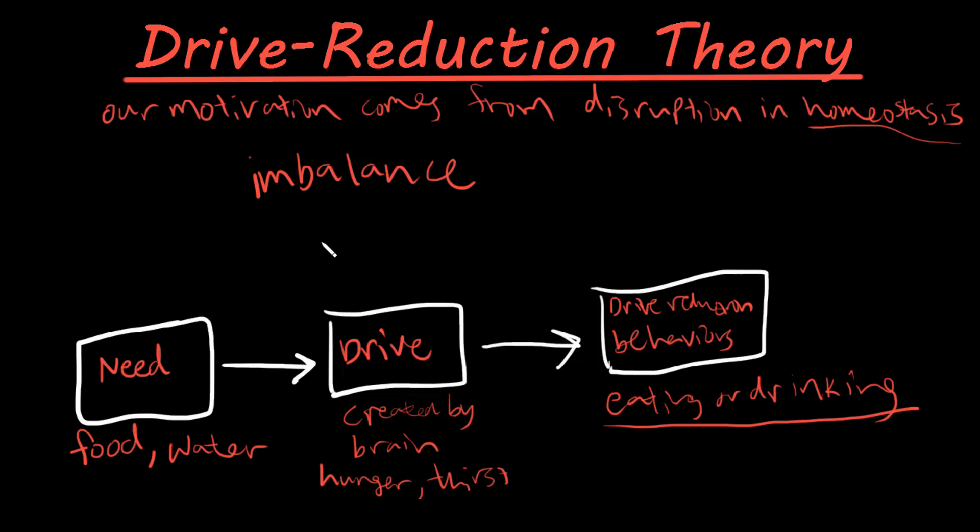And so this is the basic definition of the drive reduction theory. It says that our motivation comes from some disruption in our homeostasis and so this creates a need which then in turn we have a drive to do something about it, and then we have drive reduction behaviors that will essentially deal with this drive and fulfill our need.